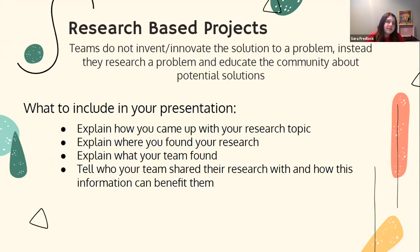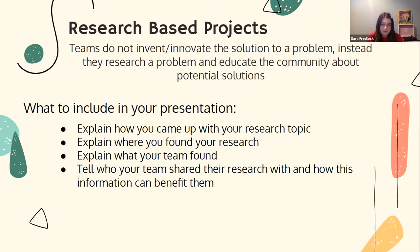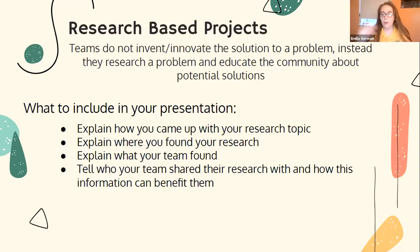During a research-based project, you should first explain how you came up with the topic you are researching, then explain where you found your research — for example, books, websites, and talking to specific experts. After that, explain what your team found while doing their research, who you shared it with, and how it could affect those people. This is different from service or innovation projects because you are researching solutions or problems, not creating something new.